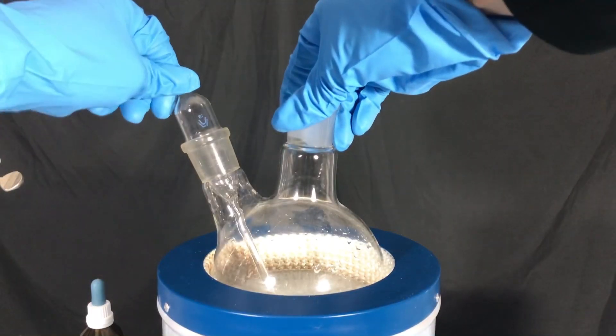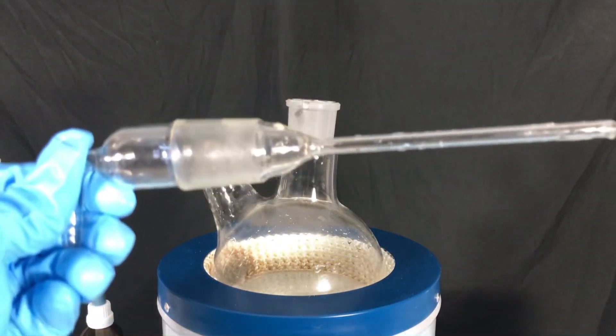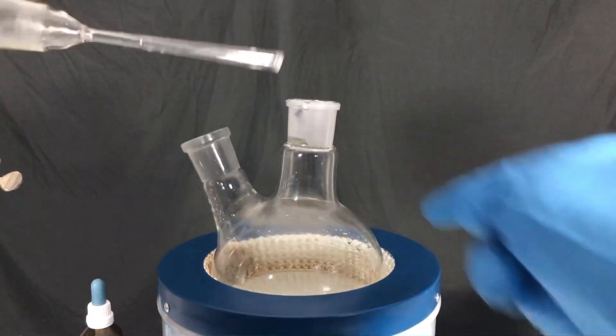By the way, what you see on the left of this round bottom flask is a gas inlet tube. We will use this to bubble chlorine gas into the sodium bromide.